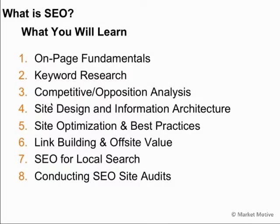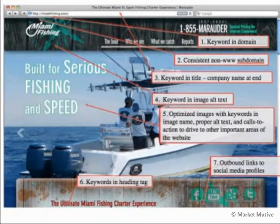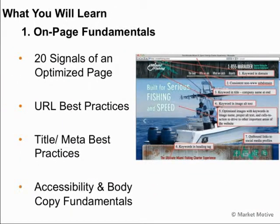Throughout this eight-part course on search engine optimization, we'll look at a variety of areas that impact your website and web pages' search engine result positioning. We'll start with the on-page fundamentals — things on an individual web page that will impact your rankings — and look at a site I developed for a small business I run. We'll look at signals or factors we send to the search results through our web page optimization, showing relevance for a given keyword, and the best practices for setting up URLs and titles and keeping copy accessible and relevant.